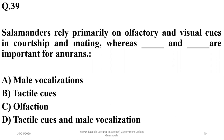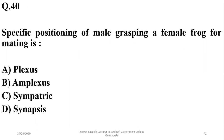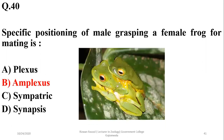Salamanders rely primarily on olfactory and visual cues in courtship and mating, whereas tactile cues and male vocalization are important for anurans. So the right option is D.